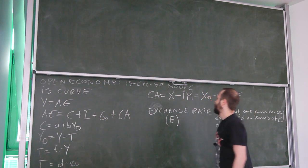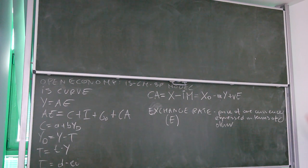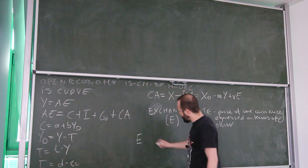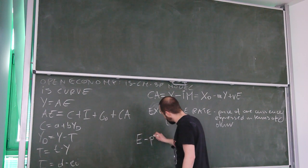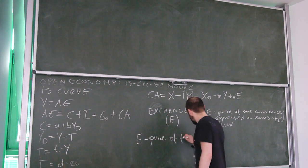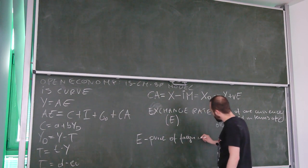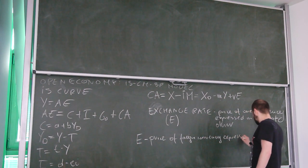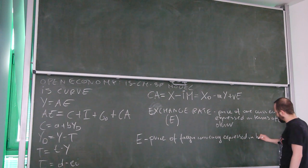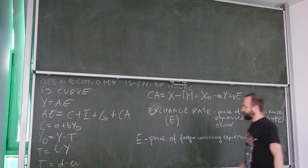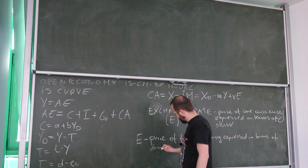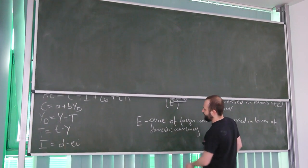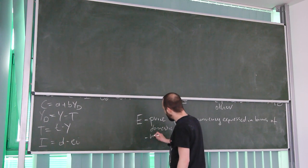This requires us to define what exchange rate is. Exchange rate is the price of one currency expressed in terms of another. We will denote exchange rate by E, and we define it in a very specific way: E in our case is the price of foreign currency expressed in terms of domestic currency.